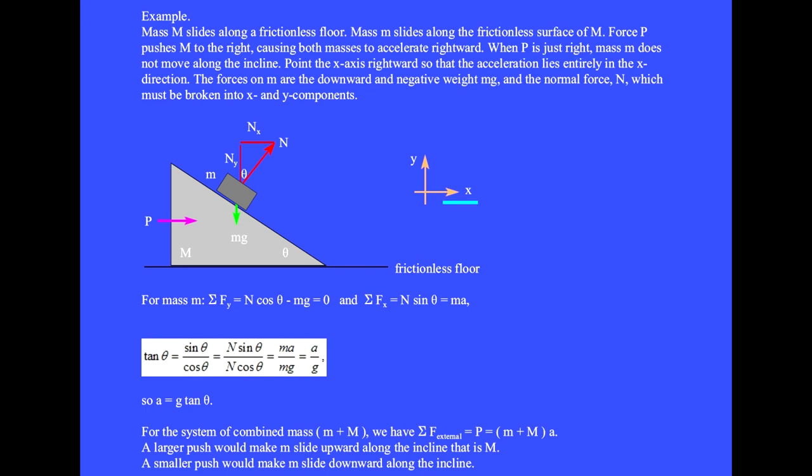Point the plus x axis rightward so that the acceleration lies entirely in the x direction. The forces on little m are the downward and negative weight mg and the normal force N, which must be broken into x and y components. For mass little m, the sum of the y components of forces equals N cosine theta minus mg equals zero, and the sum of the x components of forces equals N sine theta equals ma.